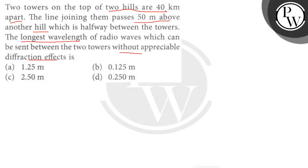So the distance between the towers, let's say capital D, is given as 40 km, and the height of the line joining the hills, let's say small d, is given as 50 m.